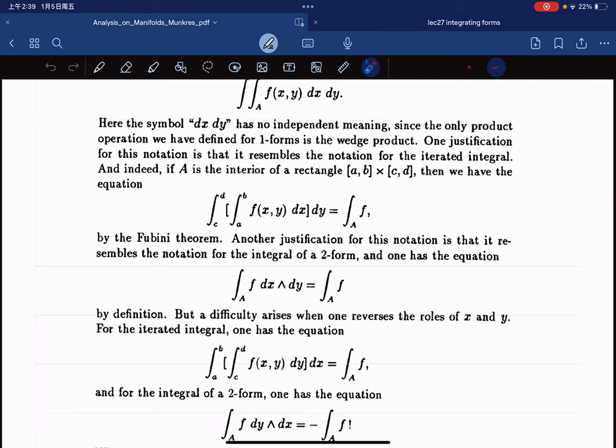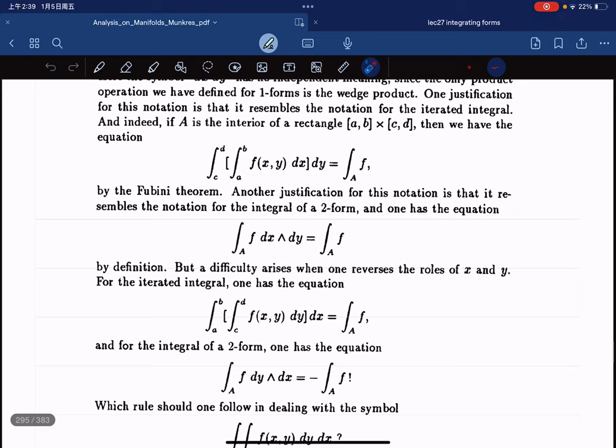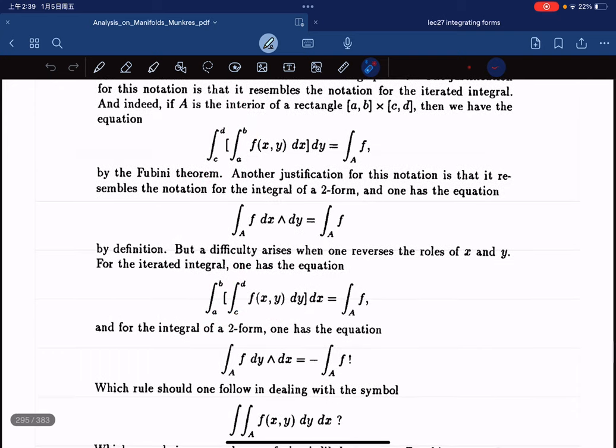And we also have this, right? And then when we switch those. We switch those two, right? It becomes dy dx. So we have this. But this is negative of F dx dy, right? Because we,